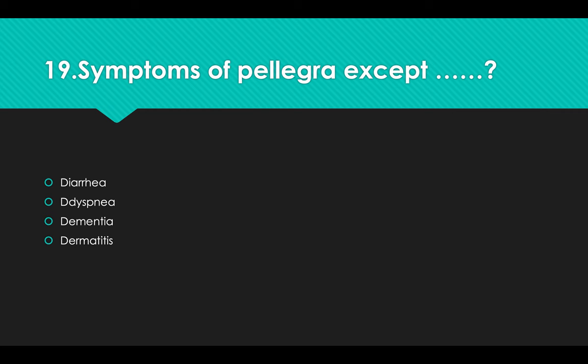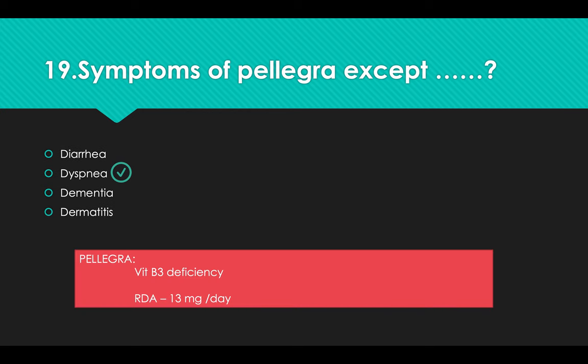Symptoms of Pellagra: Options: A) Diarrhea, B) Dyspnea, C) Dementia, D) Dermatitis. Answer: Option B, Dyspnea — this is NOT a symptom of Pellagra. Pellagra is a deficiency of Vitamin B3 (niacin); its RDA is 13 mg per day.